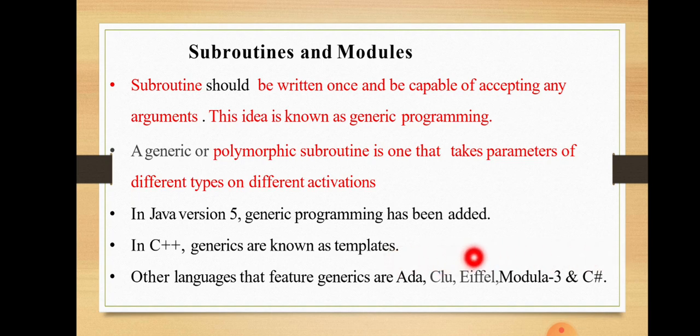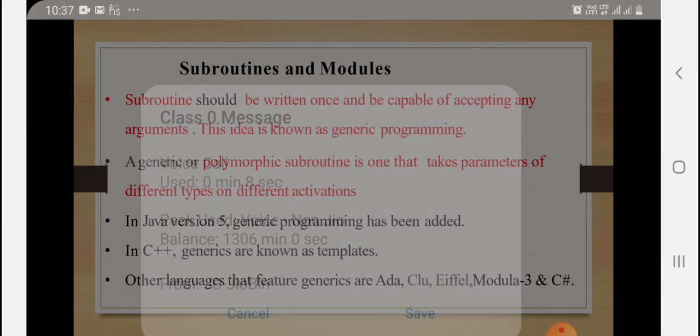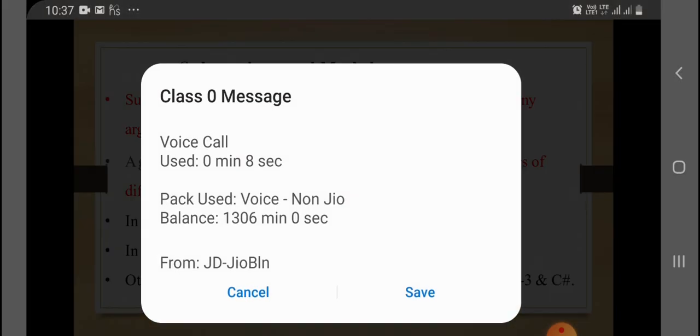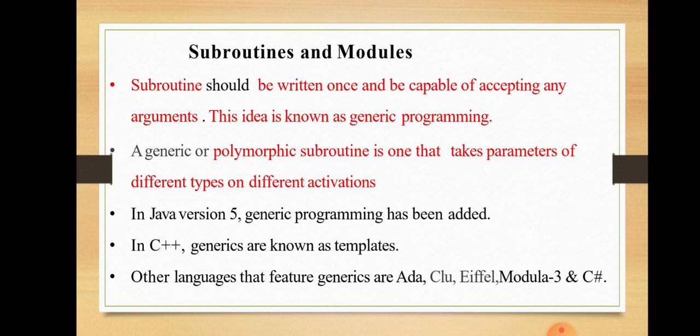Languages such as Ada, Eiffel, Modula, and C Sharp all support the concept of generics. This means that if we have a subroutine, it can accept any type of arguments — whether string, integer, or double. That is the general idea of generic programming.